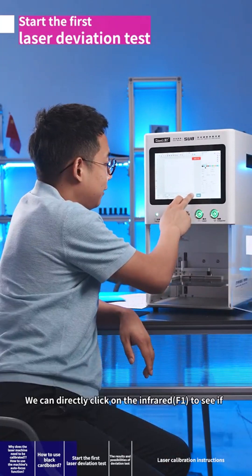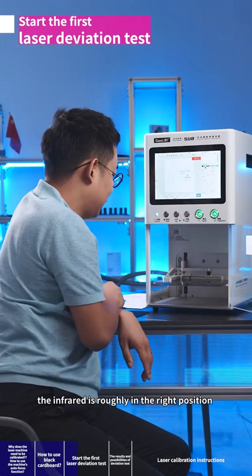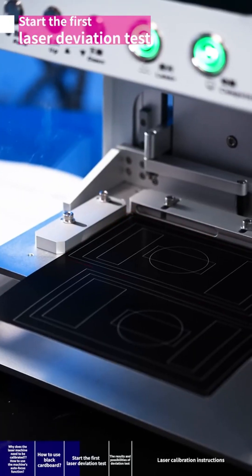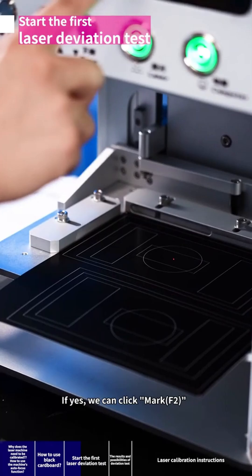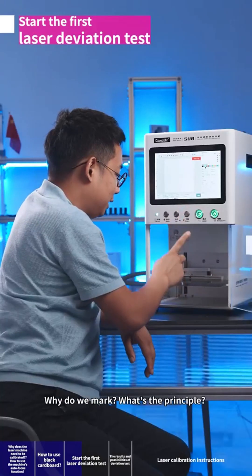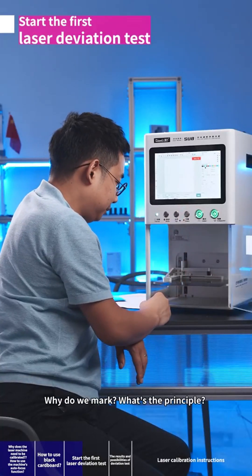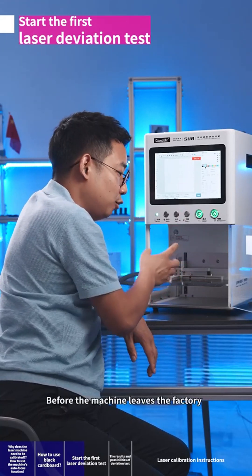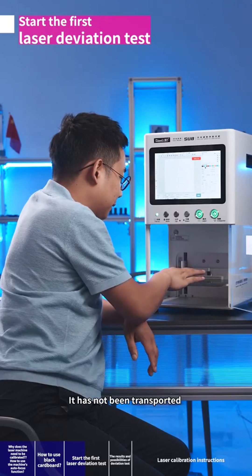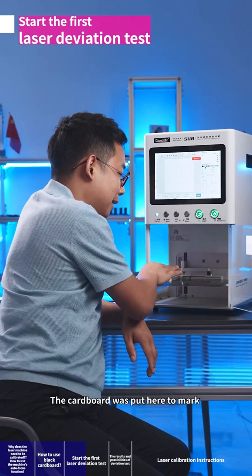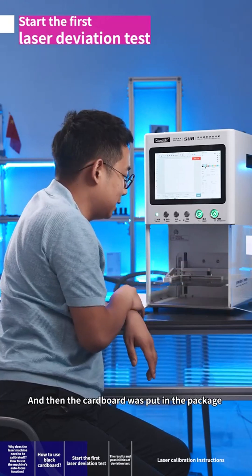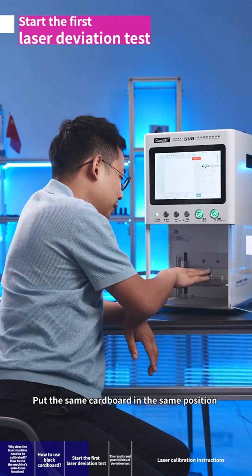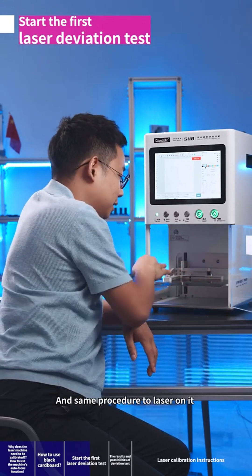We can directly click on the infrared F1 to see if the infrared is roughly in the right position. If yes, we can click mark F2. Why do we mark? What's the principle? Before the machine leaves the factory, it has not been transported. The cardboard was put here to mark and then put in the package. After transportation, put the same cardboard in the same position and same procedure to laser on it.